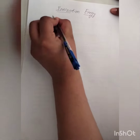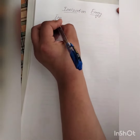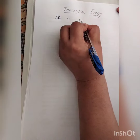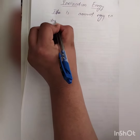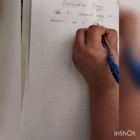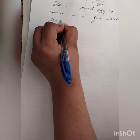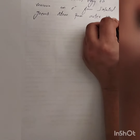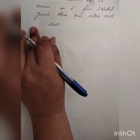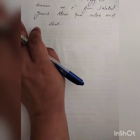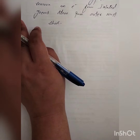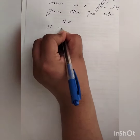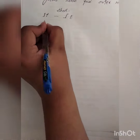Ionization energy. Today we will discuss about ionization energy. What is ionization energy? It is the minimum quantity of energy required to remove an electron from the outermost shell of an isolated gaseous atom in its ground state. It is represented by IE.